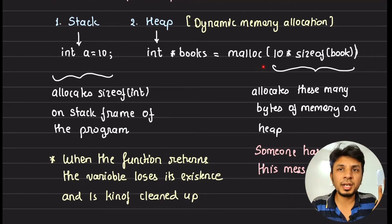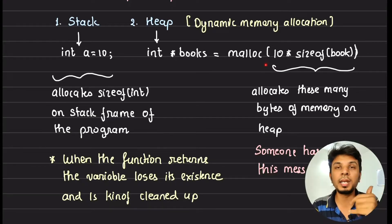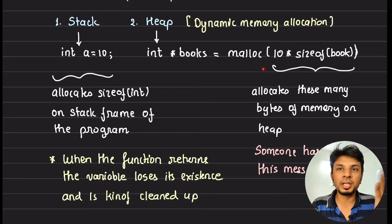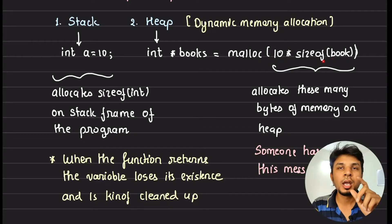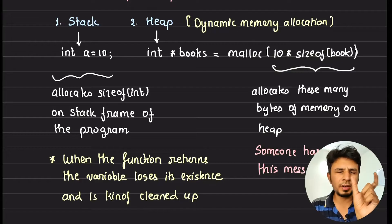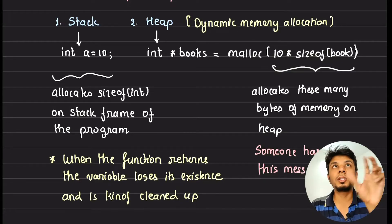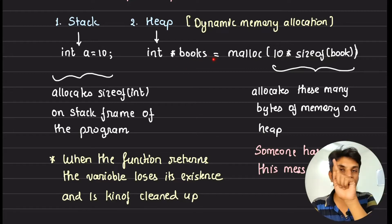This is the standard C way of doing heap allocation. You call 'malloc(10 * sizeof(book))' — 'sizeof(book)' returns 100, so 100 times 10 is 1000. After this call, the runtime engine allocates 1000 bytes of heap memory, referenced by 'books'. The variable 'books' contains the address to the starting location of that heap chunk.